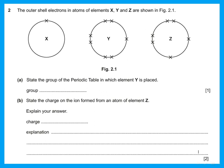Question 2: the outer shell electrons in atoms of elements X, Y, and Z are shown. State the group of the periodic table in which element Y is placed. You should know that the group number is the same as the number of electrons in the outer shell. Element Y has 7 electrons in its outer shell, so it belongs to group 7.